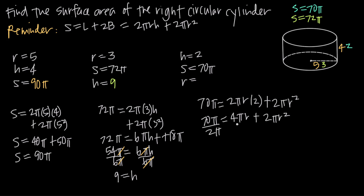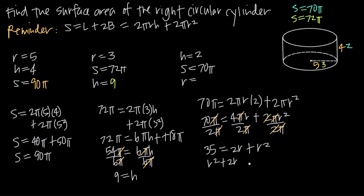Dividing everything by 2π: on the left side, 70 divided by 2 is 35, and the π's cancel. On the right, 4 divided by 2 is 2, leaving 2r, and the remaining term simplifies to r². Collecting all terms: r² + 2r − 35 = 0. Factoring the left side: (r + 7)(r − 5) = 0, so r equals −7 or r equals 5. Since a radius can't be a negative distance in real space, r must equal 5 units.